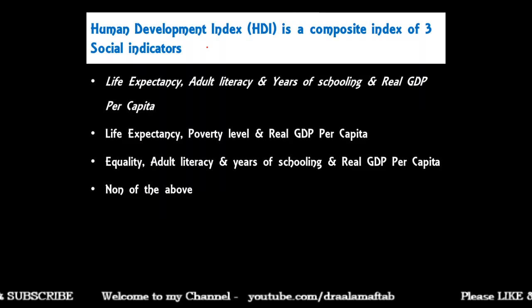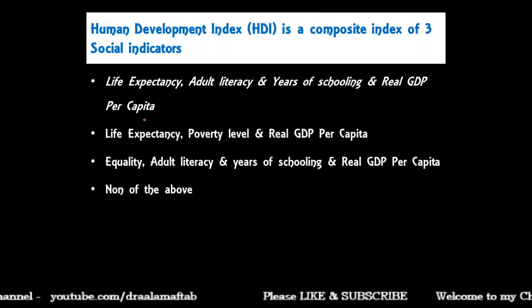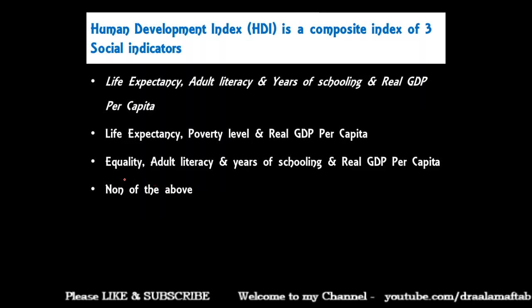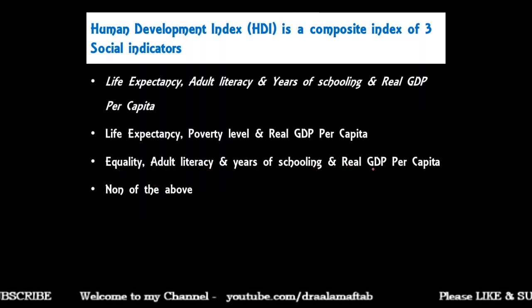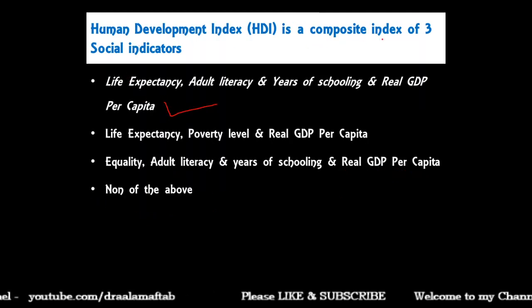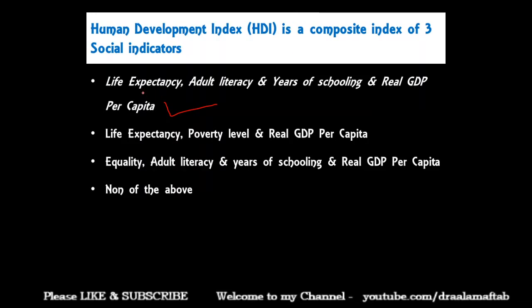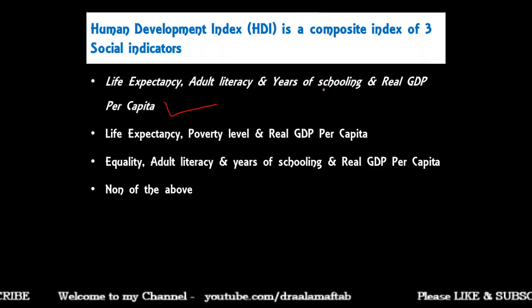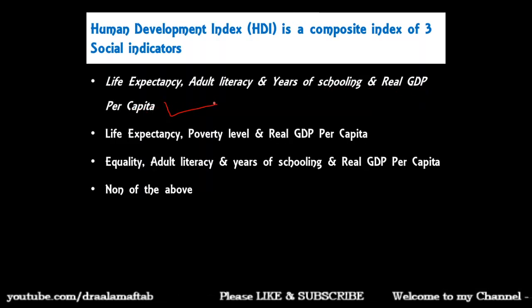Human Development Index is a composite index of three social indicators: life expectancy, adult literacy and years of schooling, and real GDP per capita; or life expectancy, poverty level and real GDP per capita; or equality, adult literacy and years of schooling and real GDP per capita? The correct answer is the first option — life expectancy indicating longevity of life, adult literacy and years of schooling for achievement in knowledge, and real GDP per capita showing standard of living.